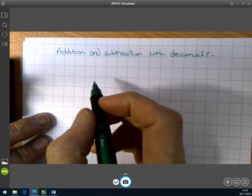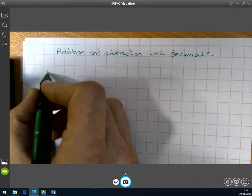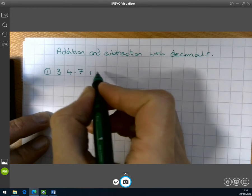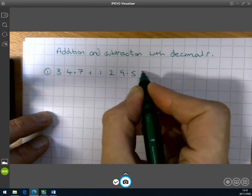So first I'm going to make sure you do is whenever we've got some numbers to work with, and let's create a question, let's do 34.7 add 129.52.